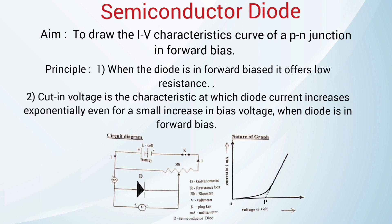Principle: When the diode is in forward bias, it offers low resistance. The cut-in voltage is the point on the characteristics at which diode current increases exponentially even for a small increase in bias voltage when the diode is in forward bias. The point P in the graph indicates the cut-in voltage.